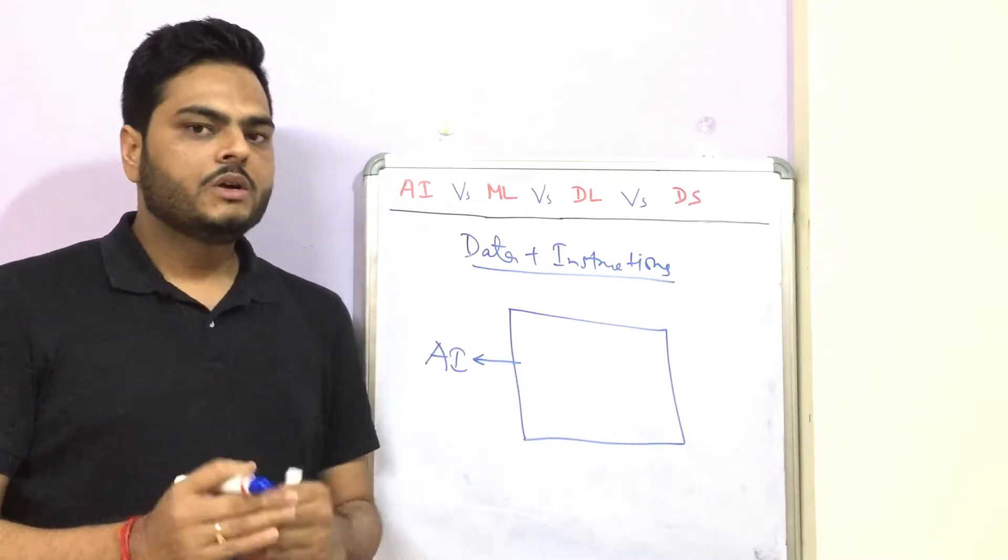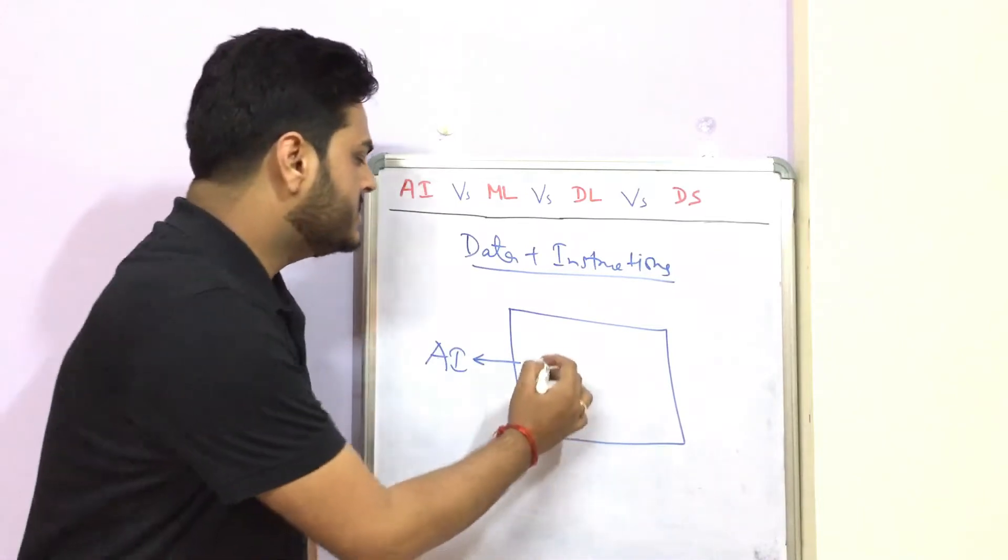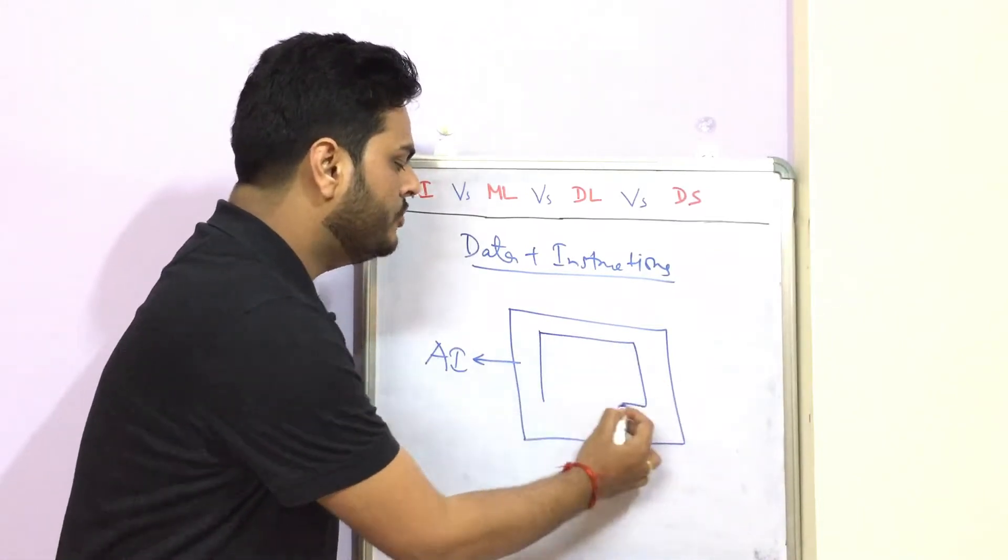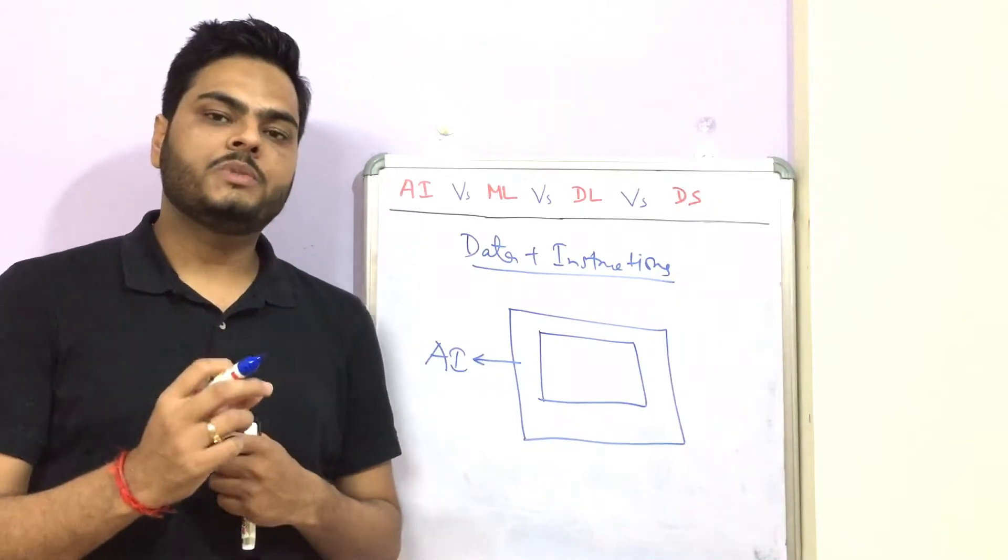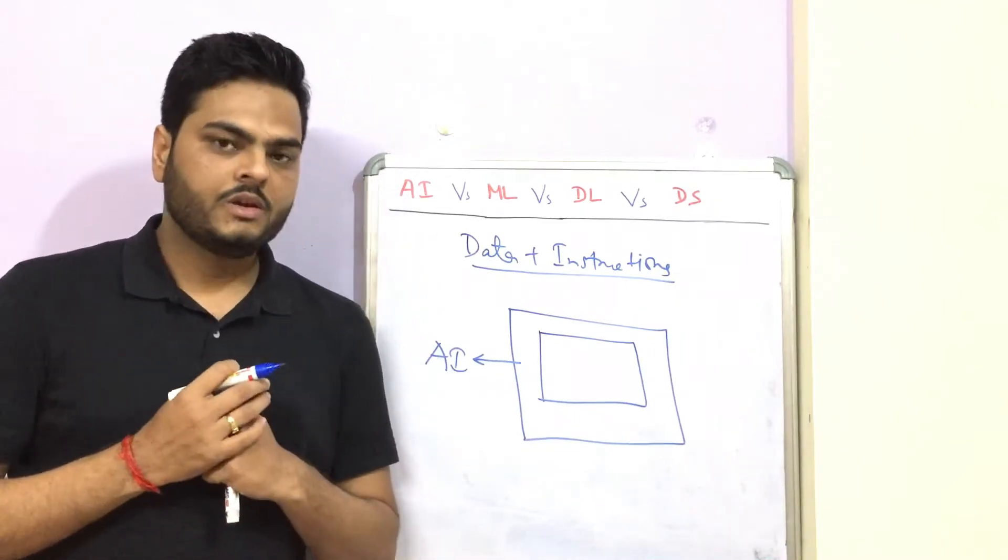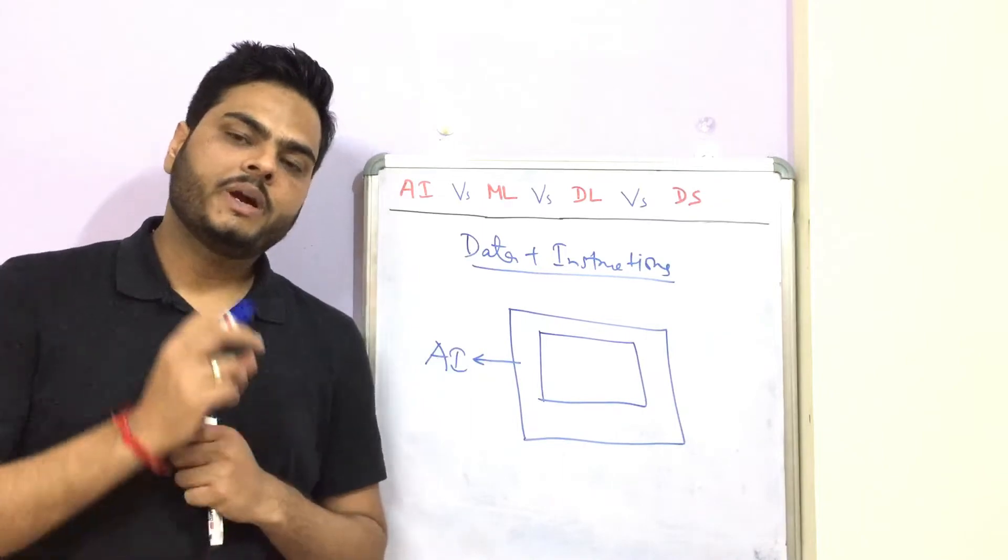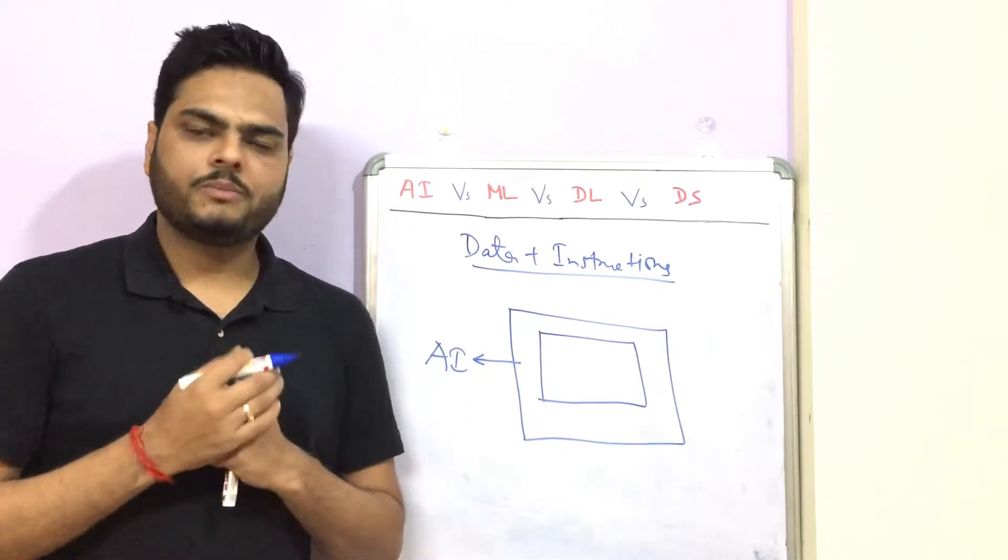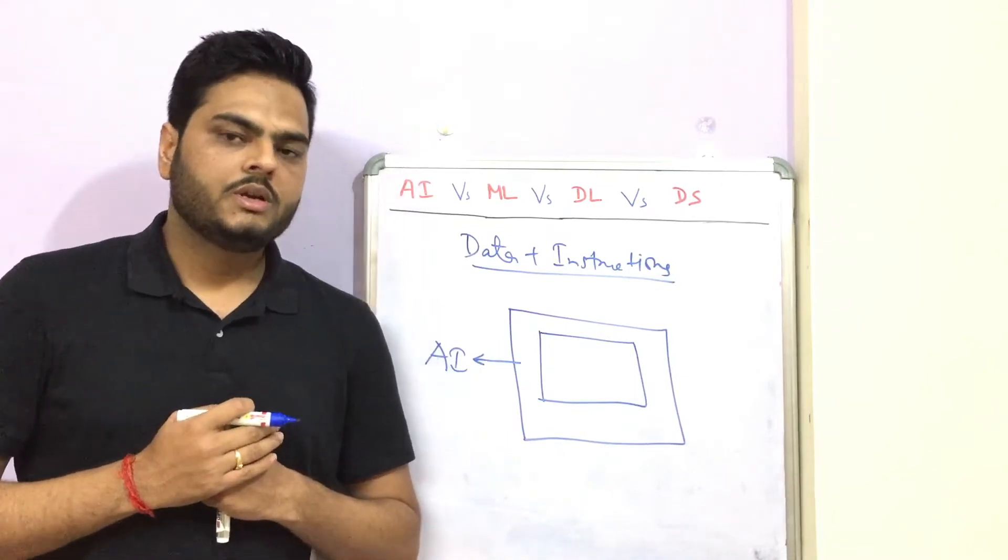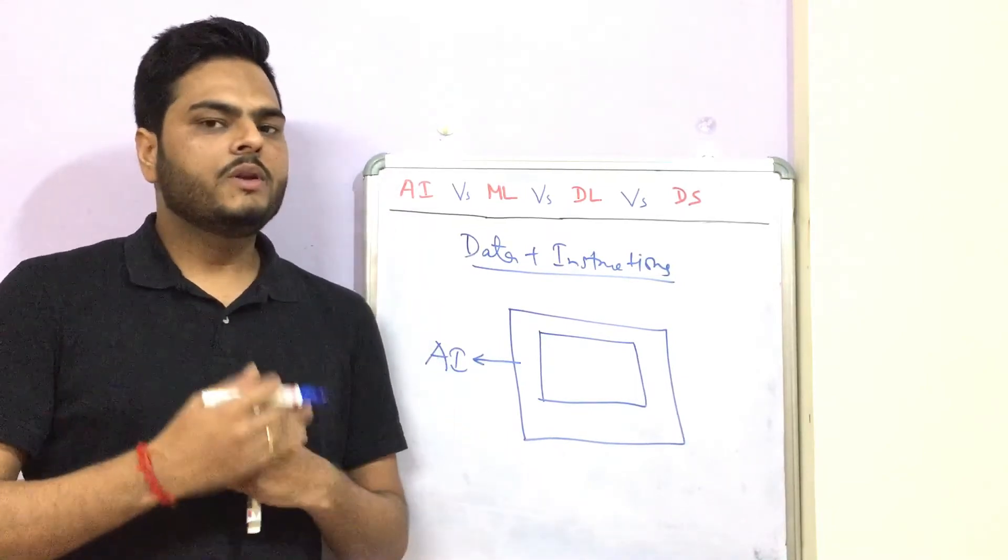What is machine learning? Machine learning is a subset of AI which deals with learning the pattern from the historical data. When I talk about learning the pattern from historical data, let me explain with a simple example.